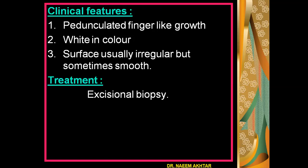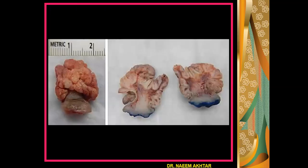Clinical features are: number one, a pedunculated finger-like growth appearing in the oral cavity; the color of the lesion is usually white; the surface is irregular but sometimes it may be smooth as well. The treatment for papilloma is excisional biopsy. This photograph shows the papilloma — you can see the papilloma is having an irregular surface.